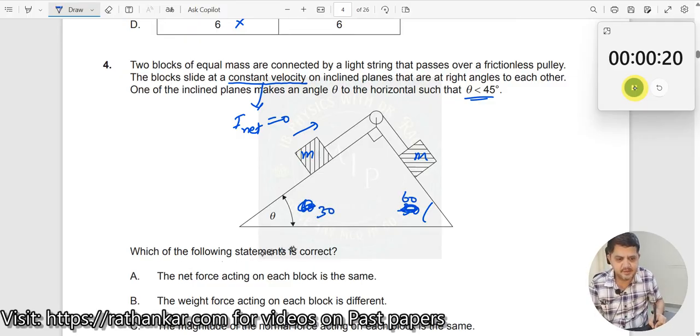Which of the following statements is correct? Net force acting on each block is the same. You can say that this is identical, this is the right one because net force acting on both the blocks is 0 only, so A should be the right option. Yes, incidentally A is the right option.